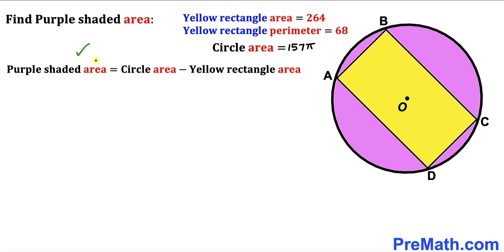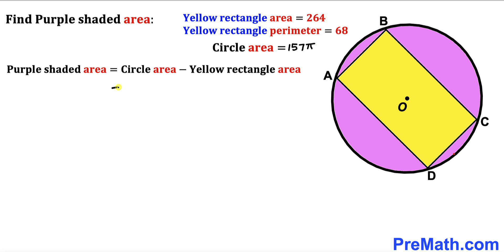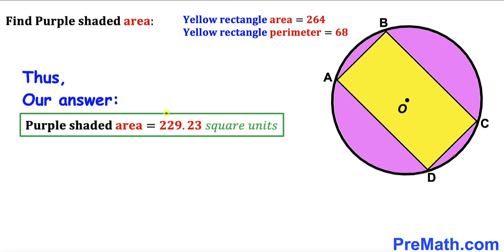For the final step, we calculate the purple shaded area: 157π minus the yellow rectangle area of 264. So the purple shaded area equals 157π minus 264, which is approximately equal to 229.23 square units. Thanks for watching and please subscribe to the channel for more exciting videos.